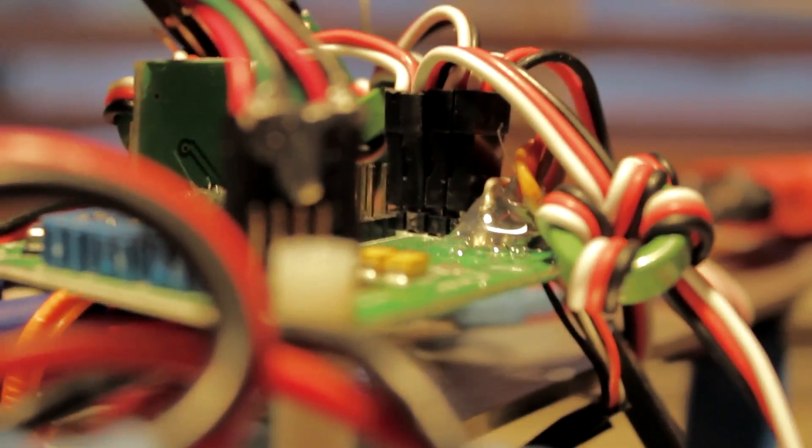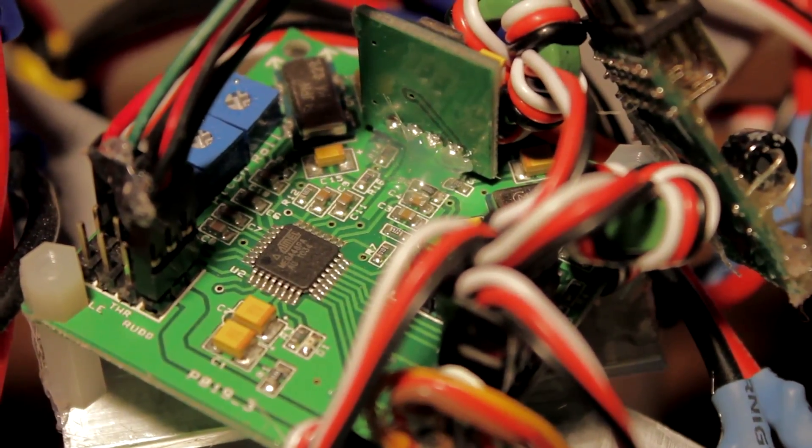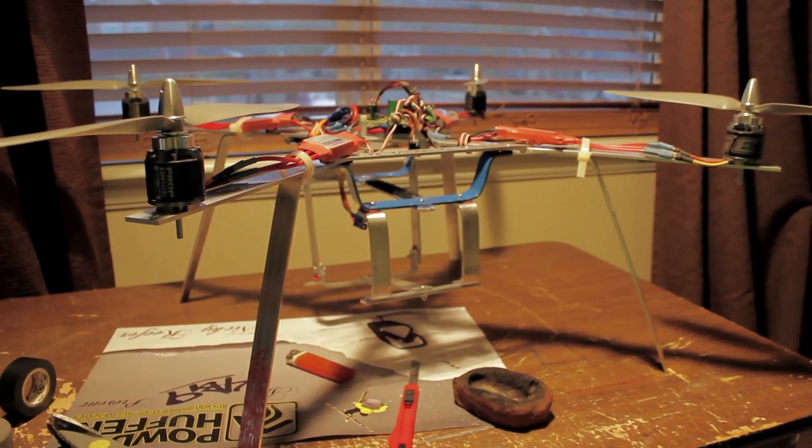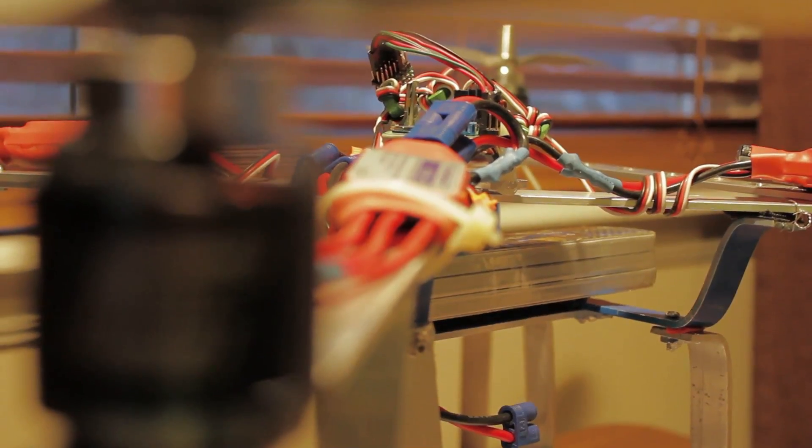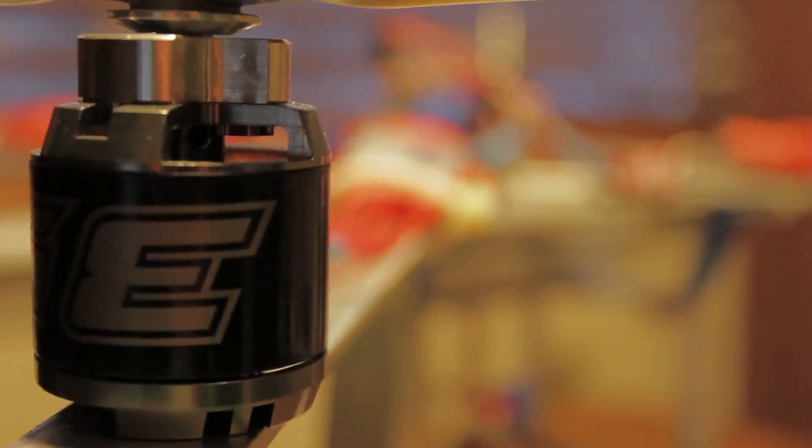It uses the HobbyKing KK controller board and just a little Spektrum Park Flyer receiver. With the battery and without a camera, the thing weighs five pounds.